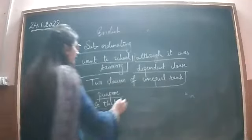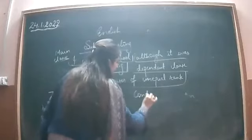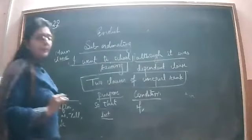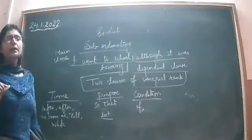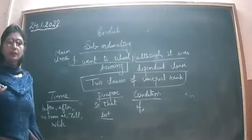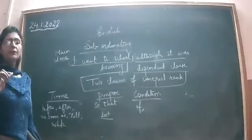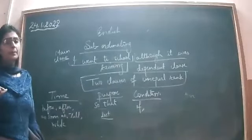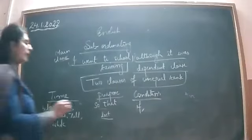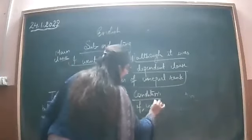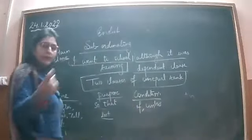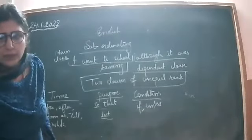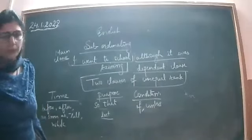Next are subordinating conjunctions of condition — when a condition is stated. For example, 'if': 'If you work hard, only then you will understand the topic.' Another example: 'Unless you work hard, you won't get good marks.' Or: 'Unless you pay attention, you won't understand the topic.' Unless you do it yourself, you will never know how to do it.